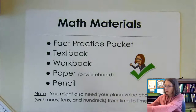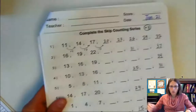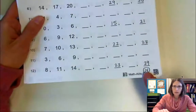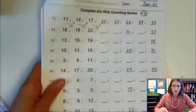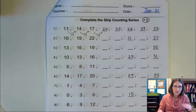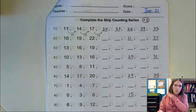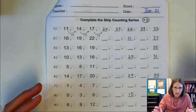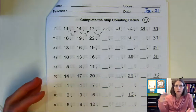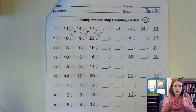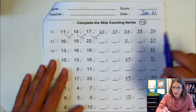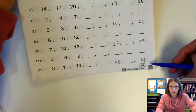So we always start with our fact practice. We are in our fact practice packet number four, and today we are going to be working on page 14. On page 14, we are going to do a little skip counting. Skip counting is something that really helps us with multiplication - also addition and division are all related. When we do a little bit of fact practice at the beginning, it helps our brains to get warmed up and get us into math mode. I put the date up here at the top. Today is Thursday, January 22nd, and we are on page 14 in our fact practice packets.